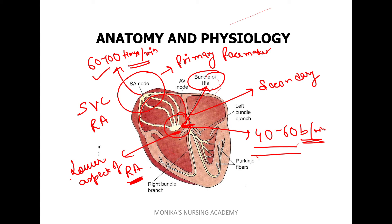Here you can see the Purkinje fibers. The electrical impulses that come from the AV node are sent to the ventricles — both the right and left ventricles. The Purkinje fibers help in sending the electrical impulses to the whole ventricle, right as well as left. Their rate is 20 to 40 beats per minute. For more such topics, you can like and subscribe to our channel. Thank you very much.